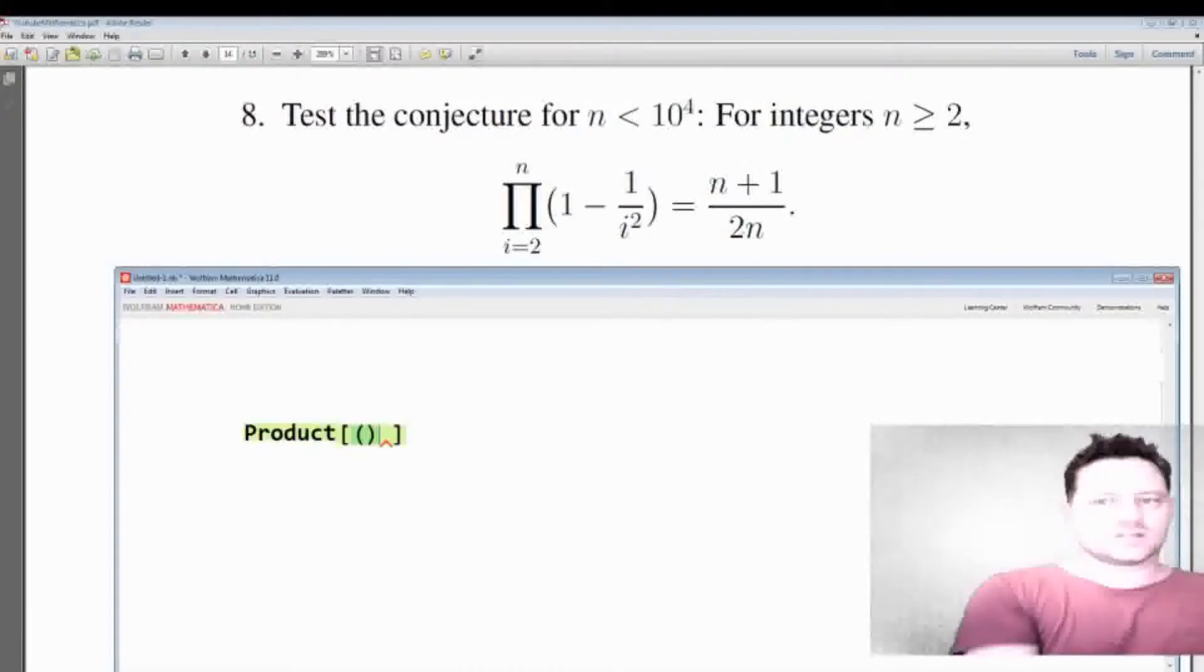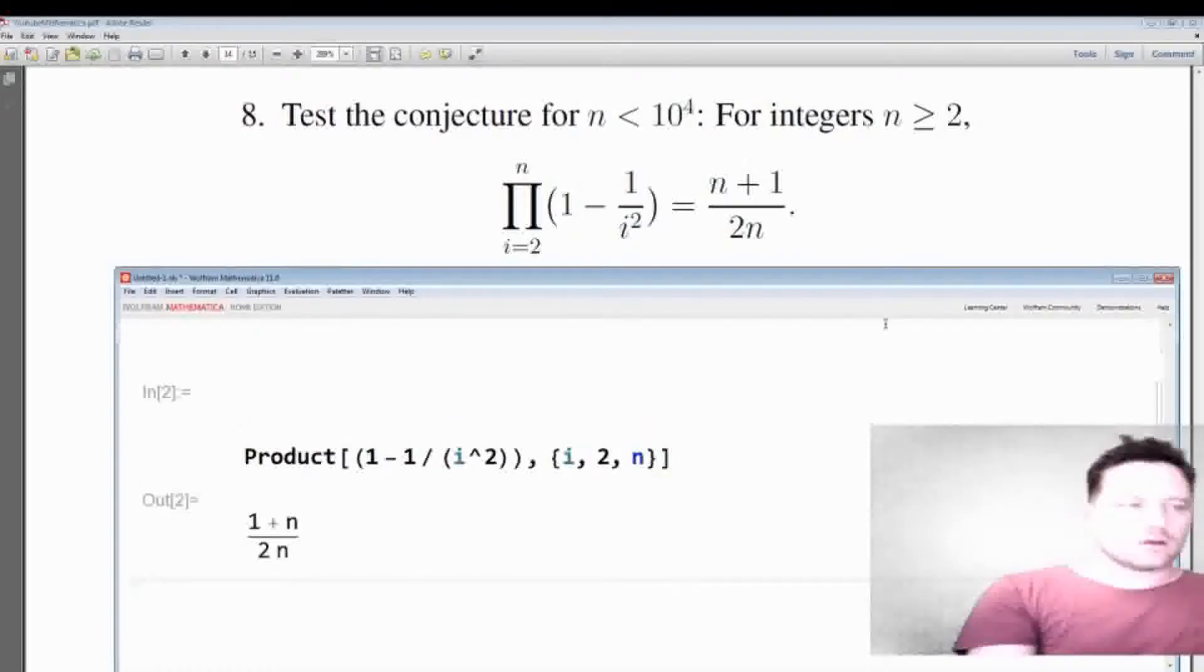I'll put in some brackets and I'm going to take a product from i going from 2 to n. Okay, and then let's enter 1 minus 1 over i squared. Okay, now press shift enter. So this is the left hand side of this formula. Shift enter. Okay, we